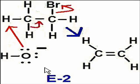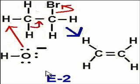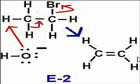In this example, we're trying to do an E2 reaction on this alkyl halide. If you look at the final product, we'll see that it's an alkene, which is exactly what we would expect from an E2 reaction.